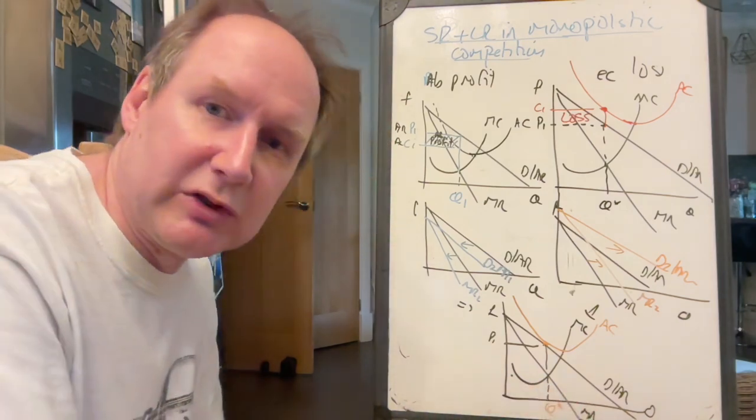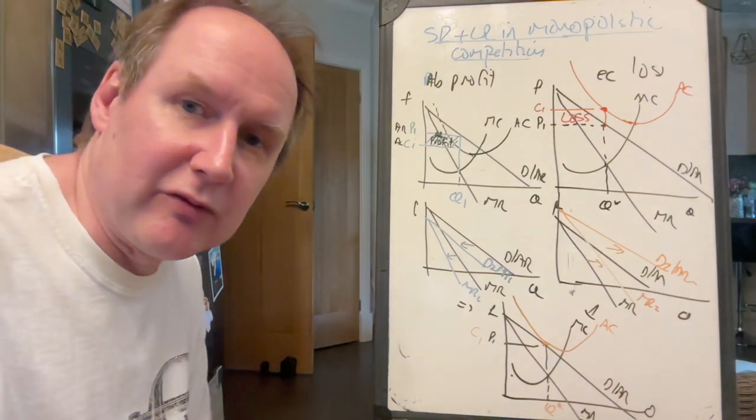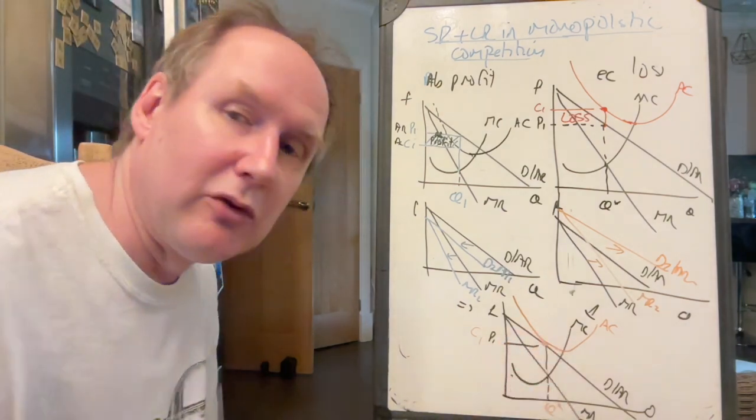So at the profit maximising output of Q star, average cost equals average revenue, and the firm's just making normal profit.